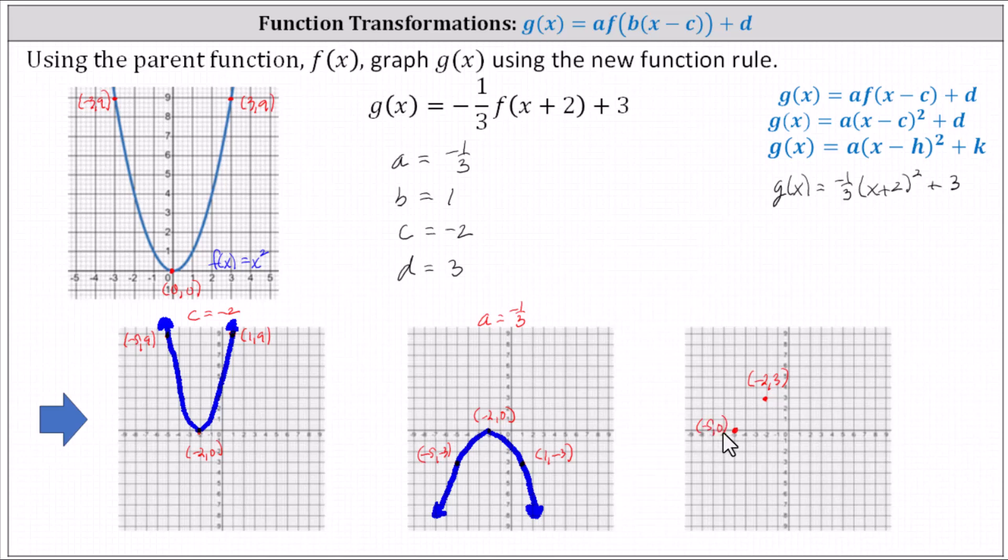And finally for the point one comma negative three, again, negative three plus three is zero. We now have the point one comma zero. This is the graph of g of x. I hope you found this helpful.